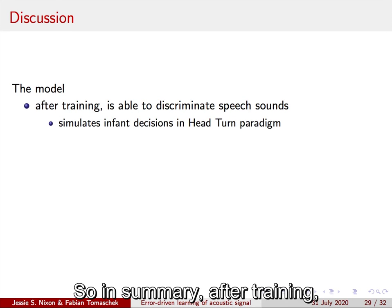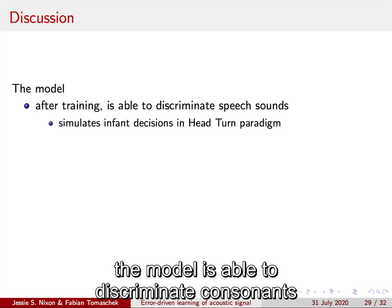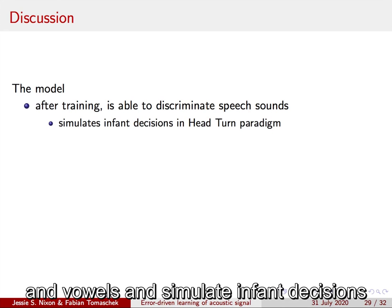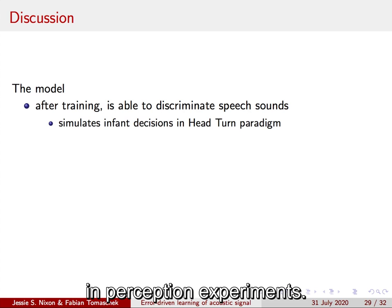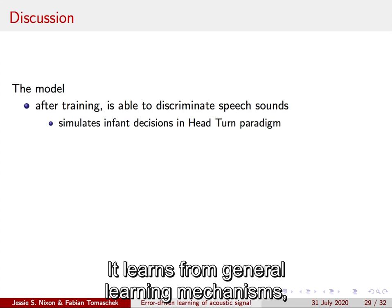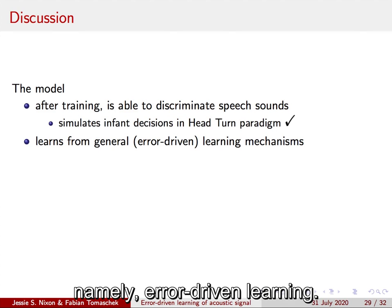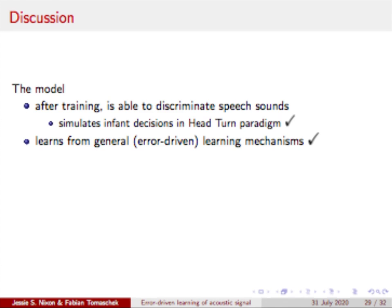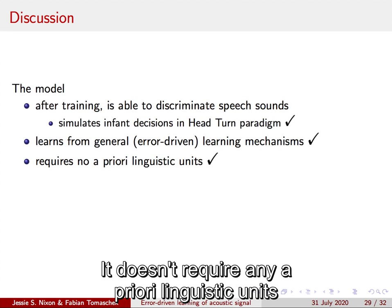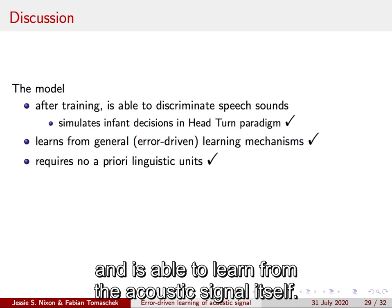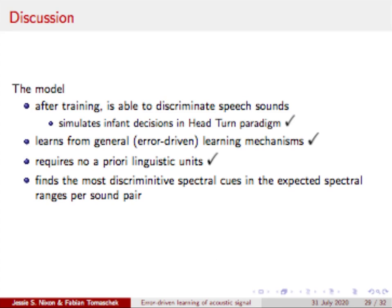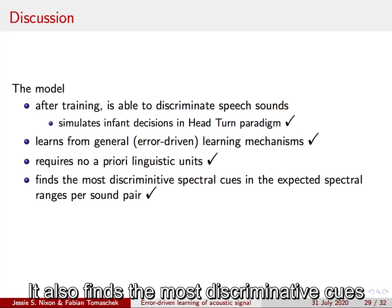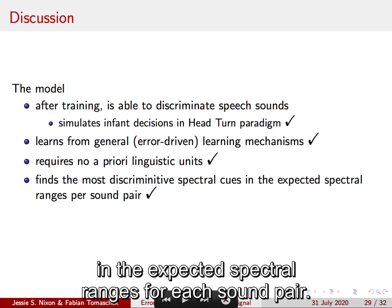So in summary, after training the model is able to discriminate consonants and vowels and simulate infant decisions in perception experiments. It learns from general learning mechanisms, namely error-driven learning. It doesn't require any a priori linguistic units and is able to learn from the acoustic signal itself. It also finds the most discriminative cues in the expected spectral ranges for each sound pair.